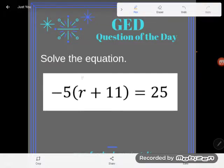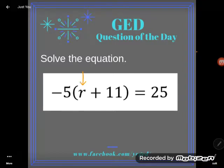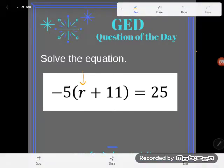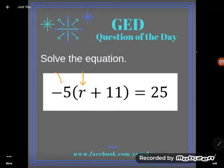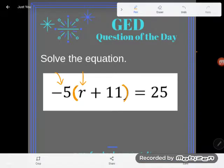I want to get r alone. That is my goal, and as you can see, r is not currently alone. I have two things going on. I have this number negative five which is shoved up against the parentheses, multiplying with this entire group, the r group. I also have the number 11.